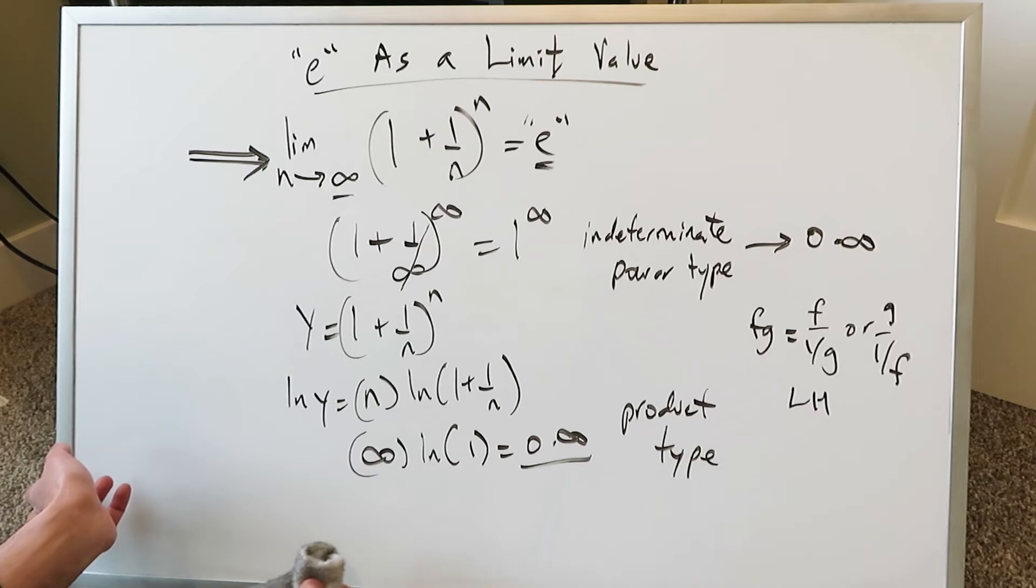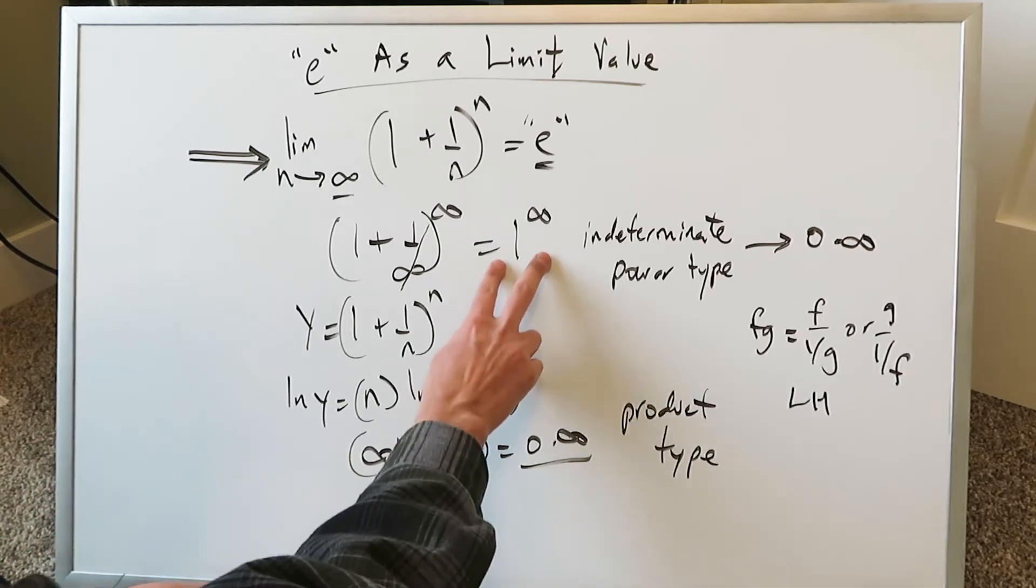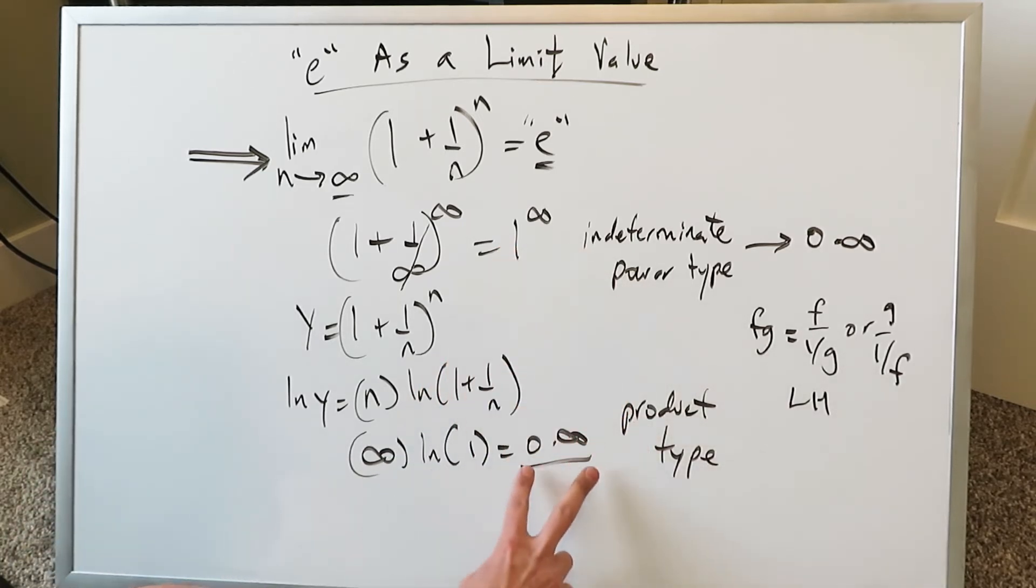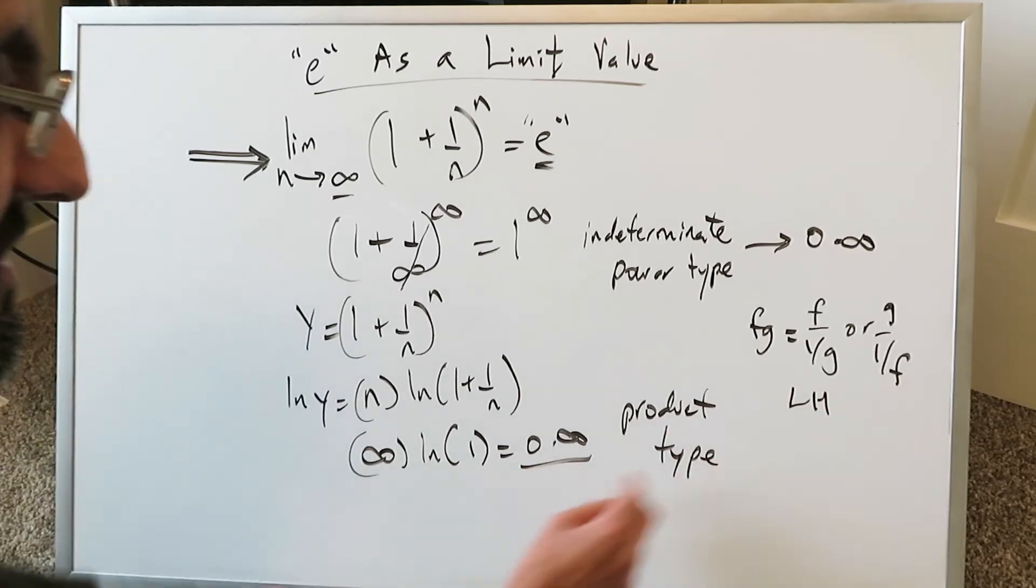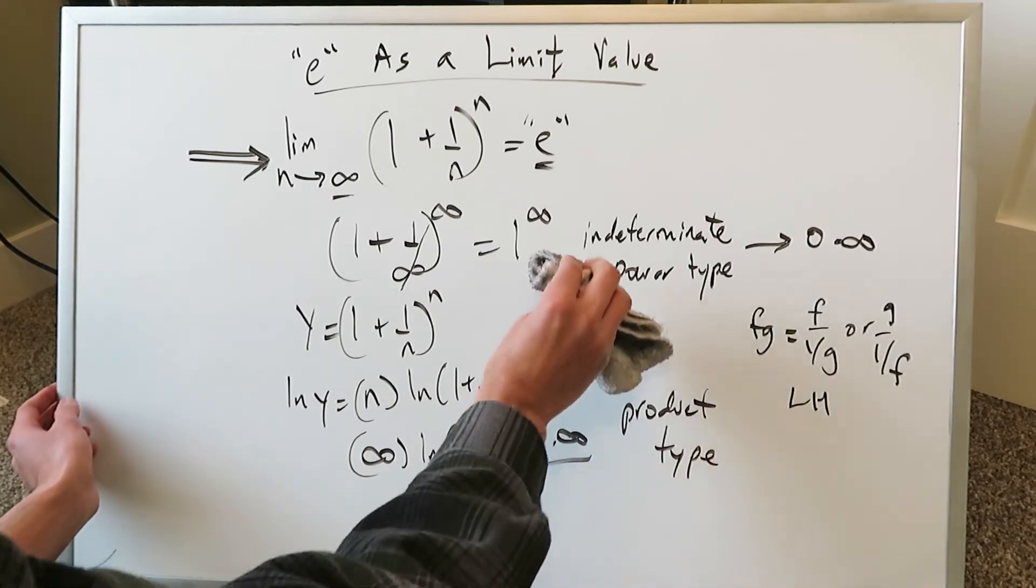Let's erase everything and we'll create space. We know we've established an indeterminate power type. And we can convert it and we have converted it into the product type. Now we have to convert it into the quotient form. And let's do that.